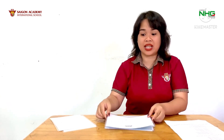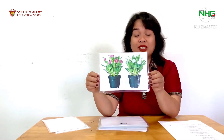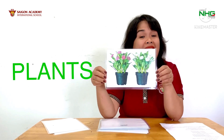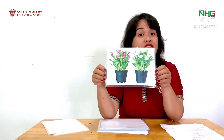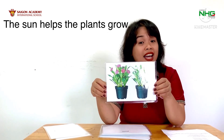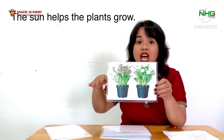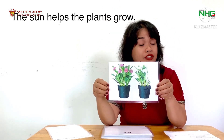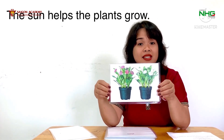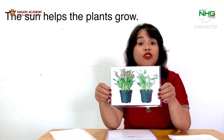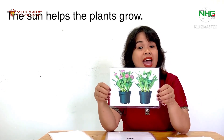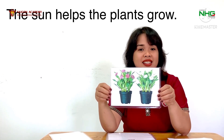Let's go to the next one. The second one is this. What's this? It's plants. The sun helps the plants grow. Kids, repeat after teacher: the sun helps the plants grow.